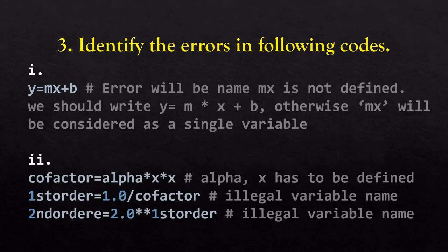Next: cofactor = alpha * x * x, where alpha and x have to be defined first. Then 1storder is another variable storing 1.0 / cofactor. The variable name 1storder begins with a number which is not allowed. Similarly, 2ndorder also begins with the number 2, which is not acceptable. Both are illegal variable names and will give an error.